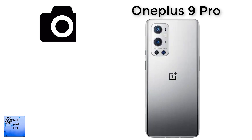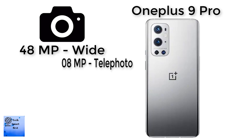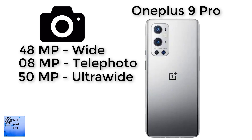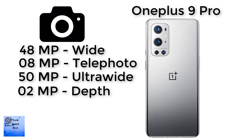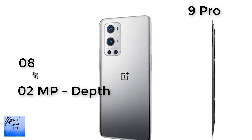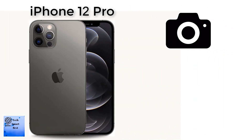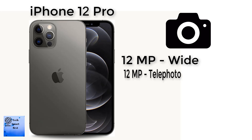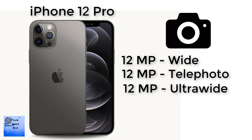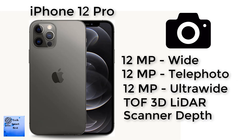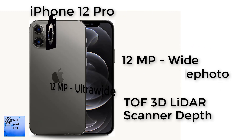The camera comparison between both smartphones. The main camera of the OnePlus 9 Pro is a quad camera: 48 megapixel wide, 8 megapixel telephoto, 12 megapixel ultra-wide, and 2 megapixel depth camera. The main camera of the Apple iPhone 12 Pro is also a quad camera: 12 megapixel wide, 12 megapixel telephoto, 12 megapixel ultra-wide, and a 3D LiDAR scanner depth sensor.